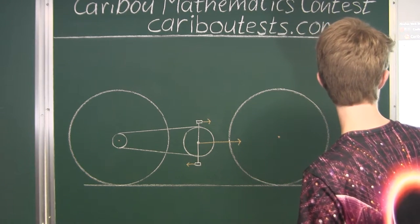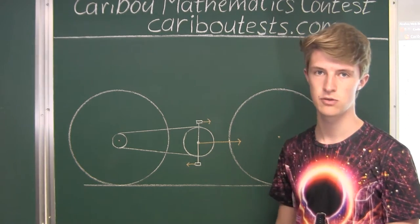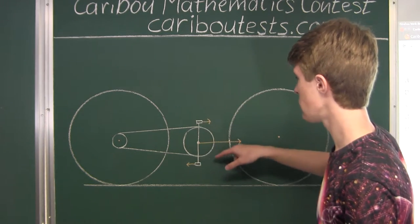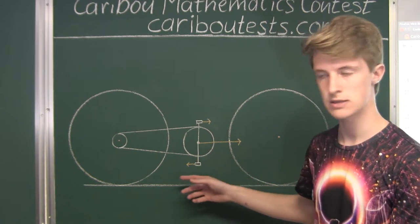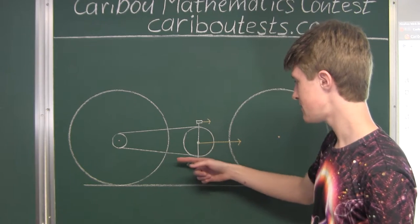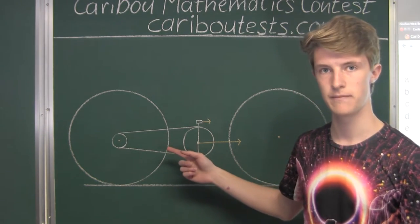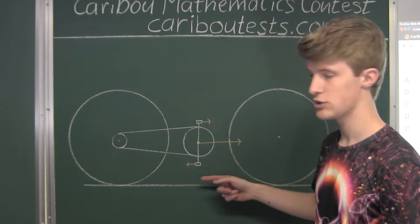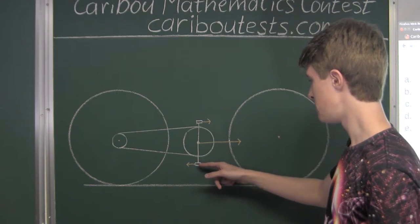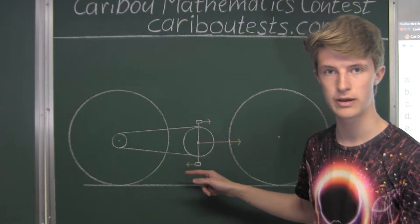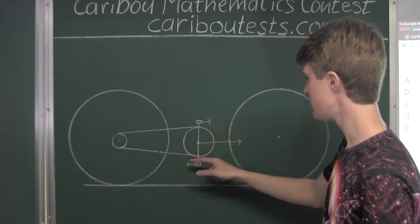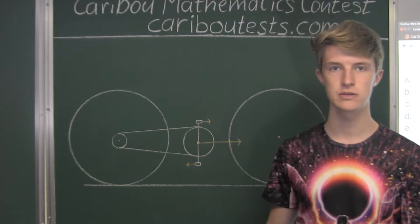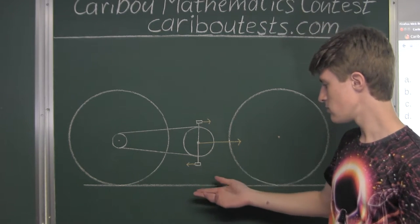For option B, the pedals start turning clockwise and the bicycle moves to the right. When the pedals would be turning clockwise, the bottom pedal would actually be moving to the left in relation to the bike frame. But the bike frame would be moving much farther than that in relation to the ground. So the bottom pedal, when turning clockwise, would be moving to the right after finding the sum of both of those vectors — it moves to the right in relation to the ground.